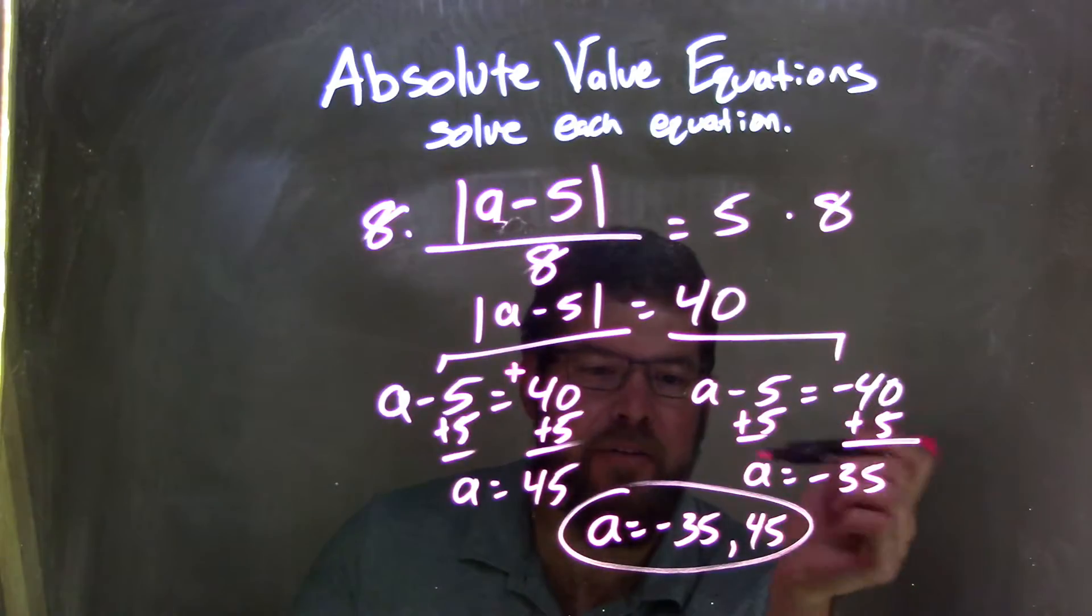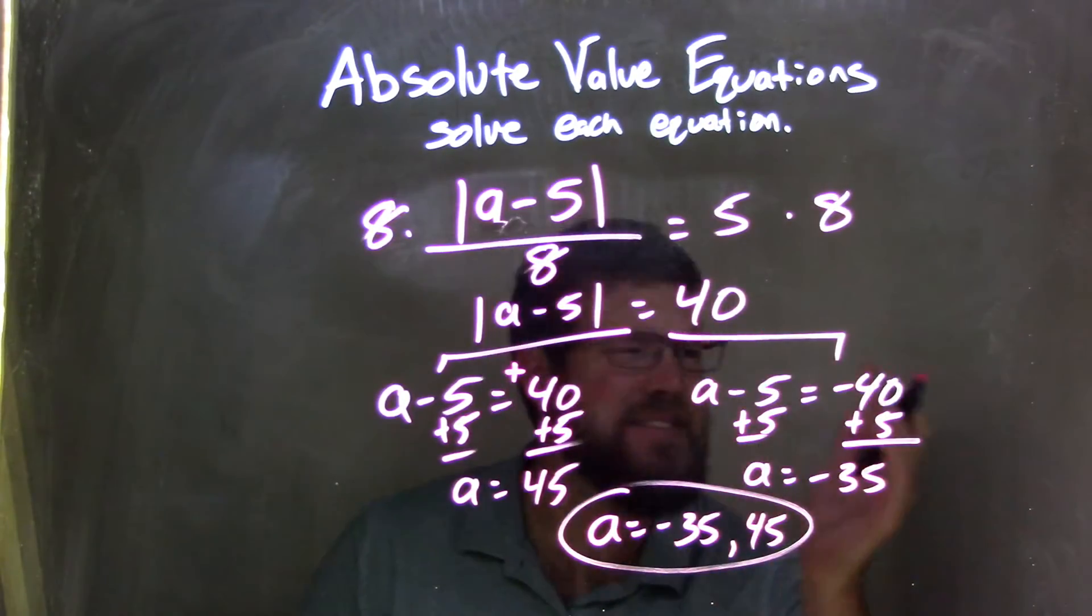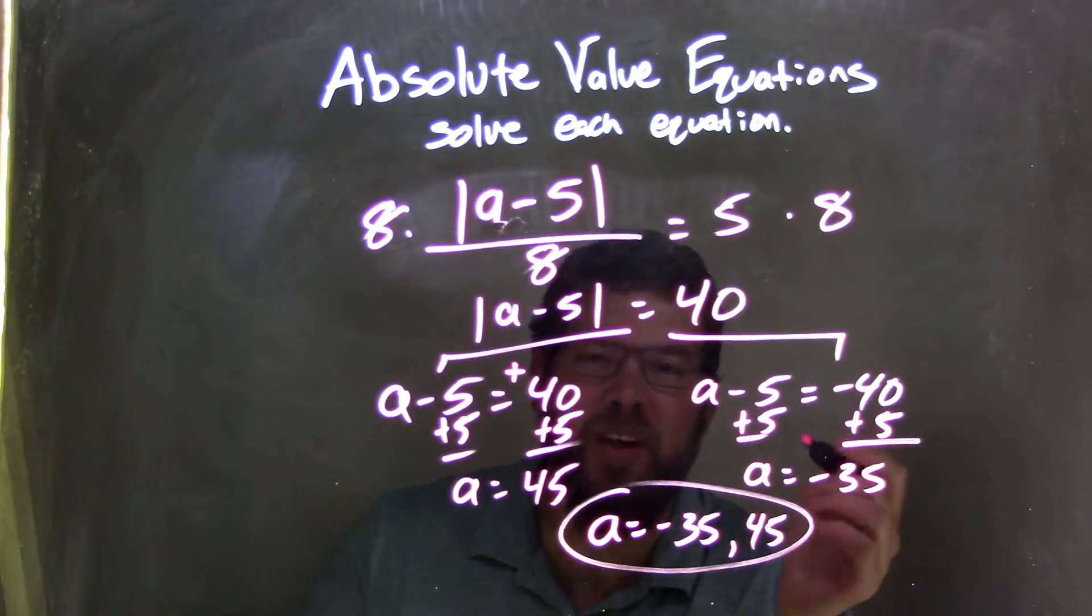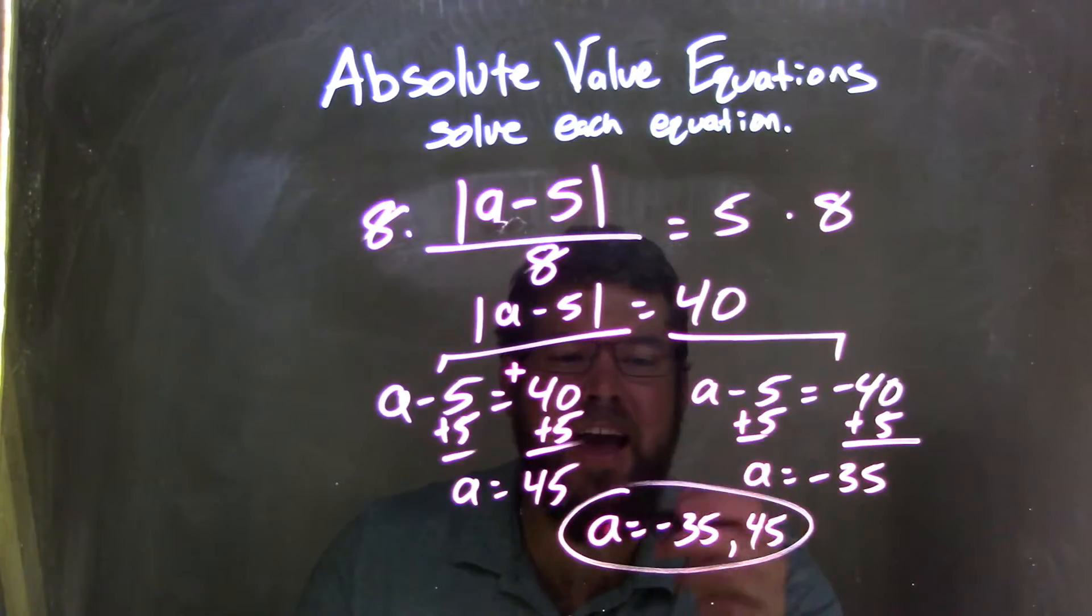I wrote the answer from least to greatest because that looks nicer, and so our final answer is a equals negative 35 and positive 45.